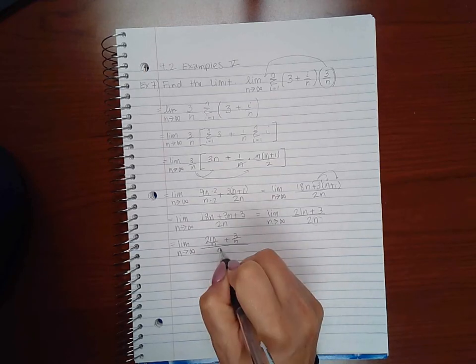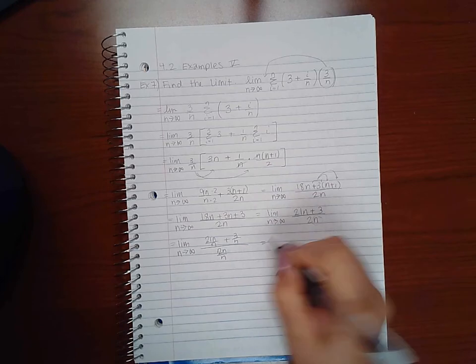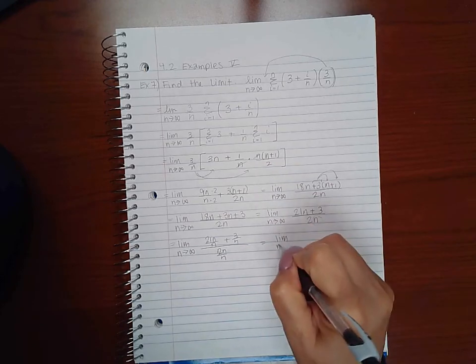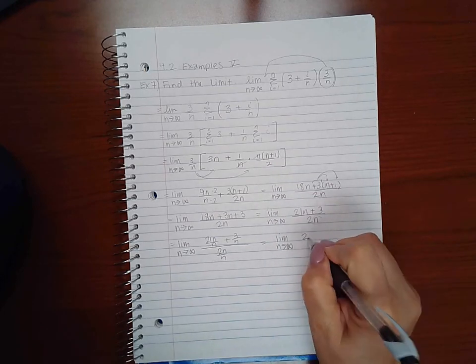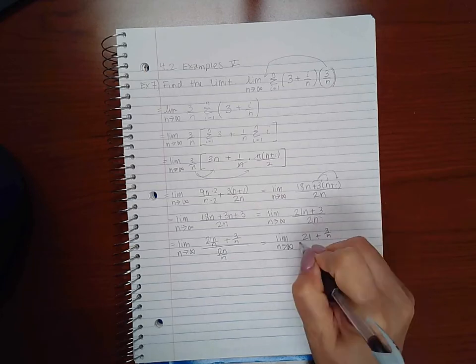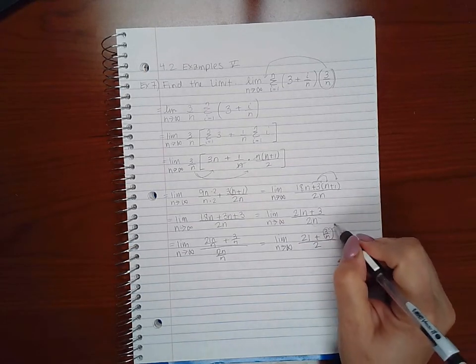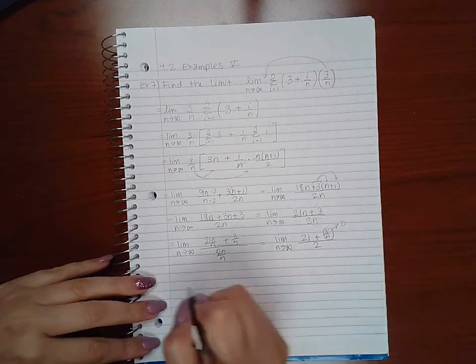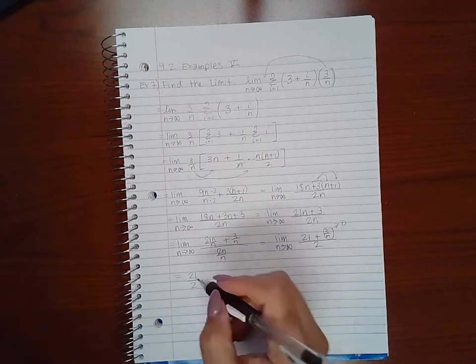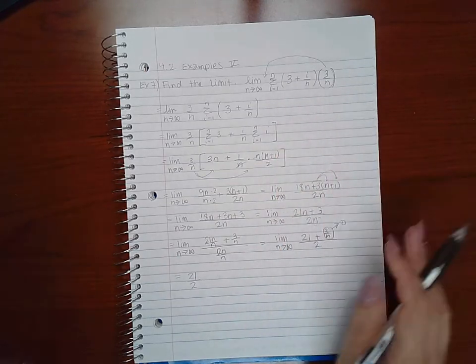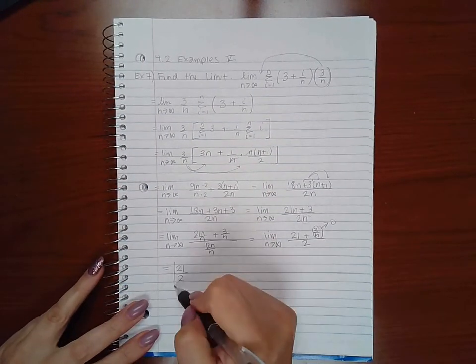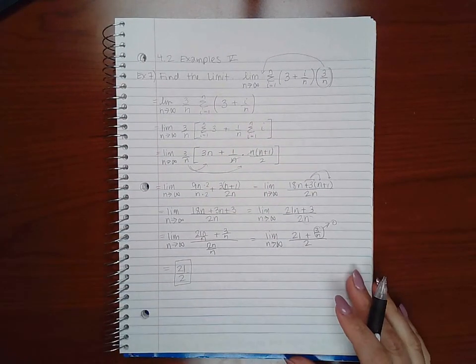So if I simplify that I get 21 plus 3 over N over 2. As N goes to infinity this fraction will go to 0, leaving me with just 21 over 2. So the limit of this summation is just going to be 21 over 2.